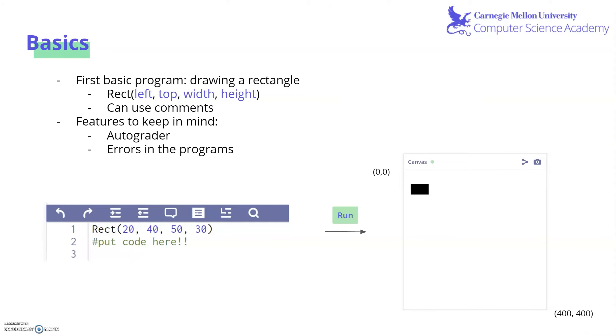The first program you learned is how to draw a rectangle, and this involves rect, open parentheses, leftmost point, top point, width, and height.